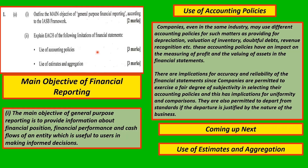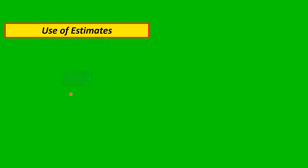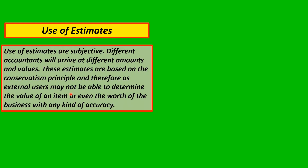Use of estimates and aggregation. Use of estimates: estimates are subjective — different accountants will arrive at different amounts and values. These estimates are based on the conservatism principle, and therefore external users may not be able to determine the value of an item or even the worth of the business with any kind of accuracy.